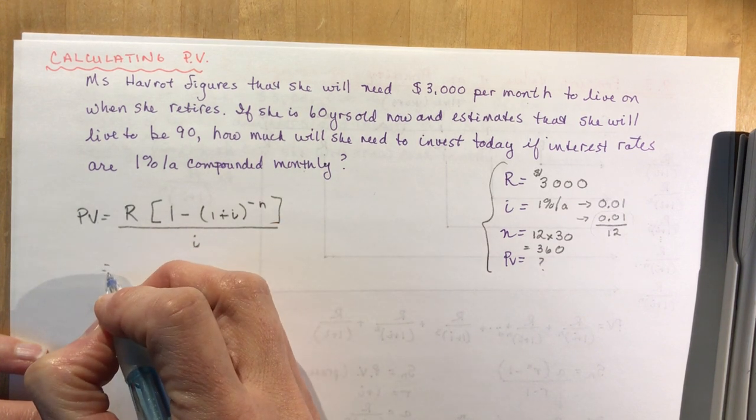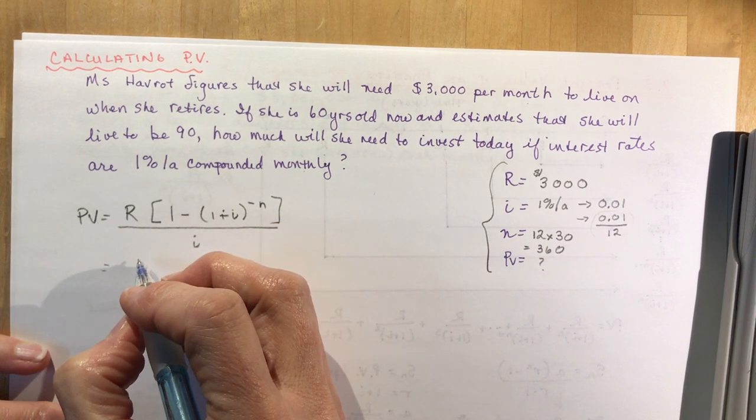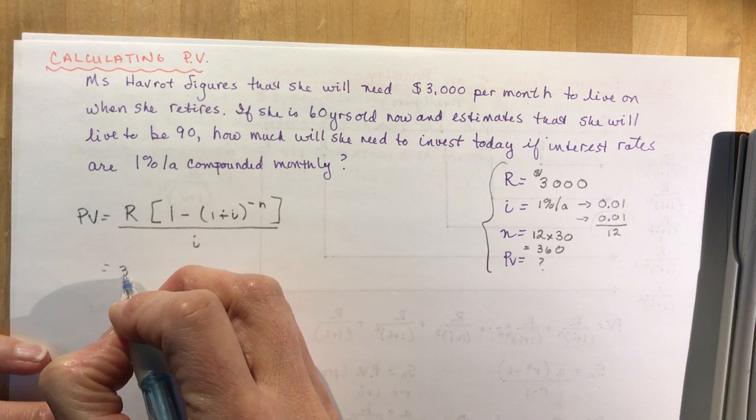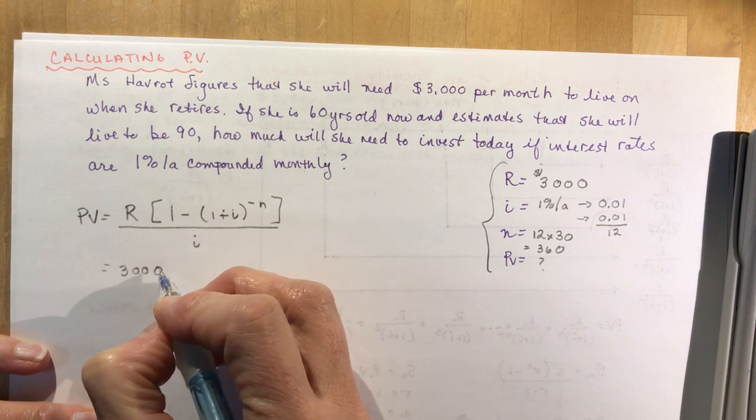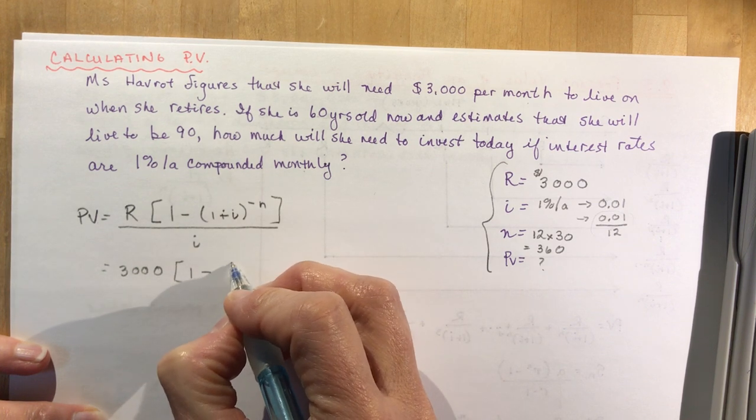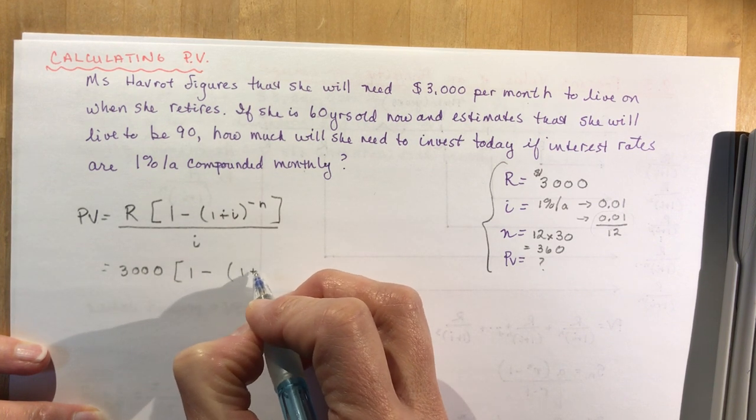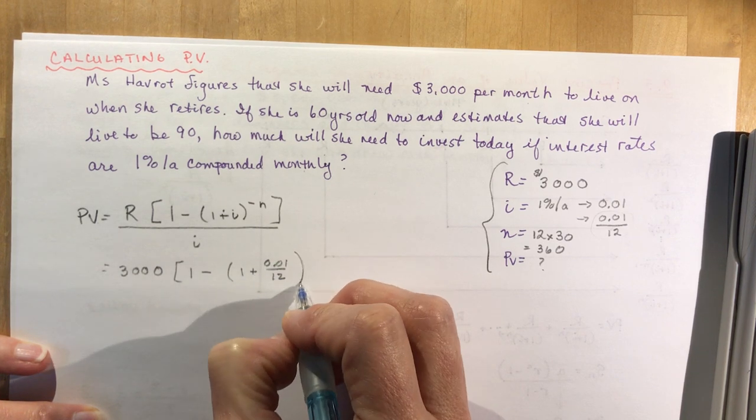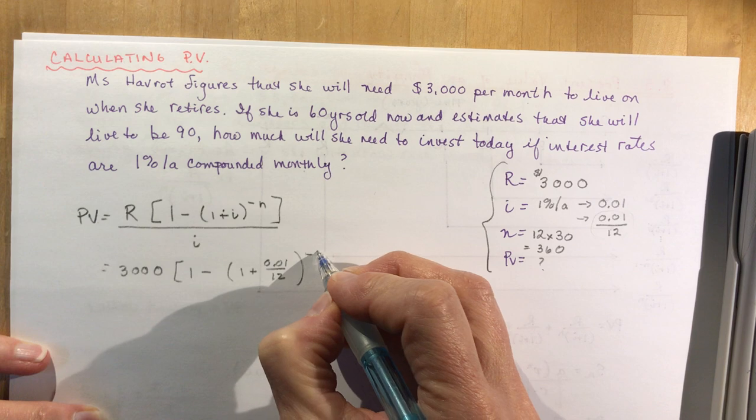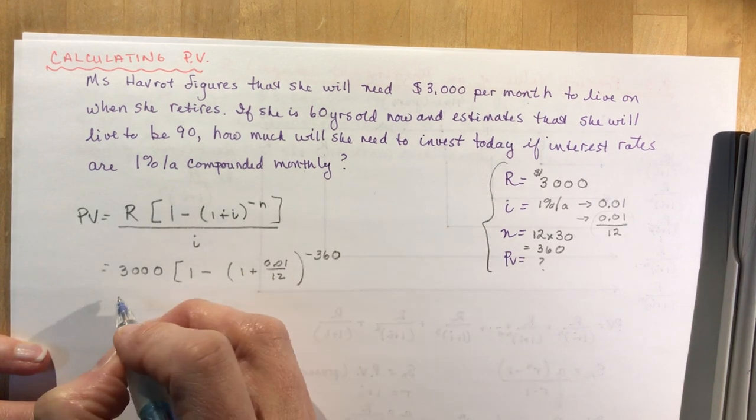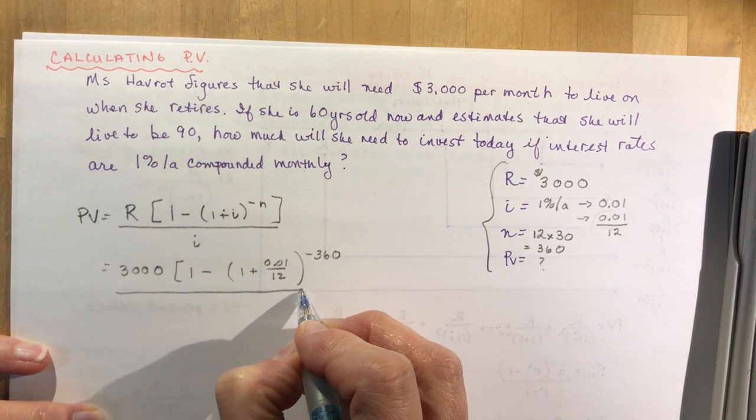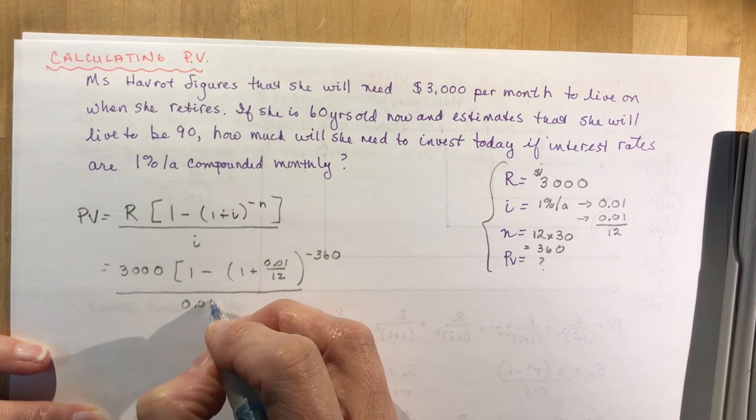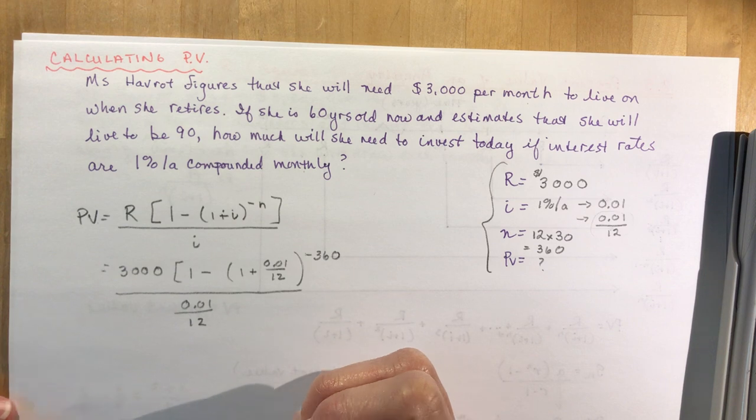My regular payment is $3,000 per month. 1 minus [1 + 0.01/12]^(-360) divided by the interest rate which is 0.01/12.